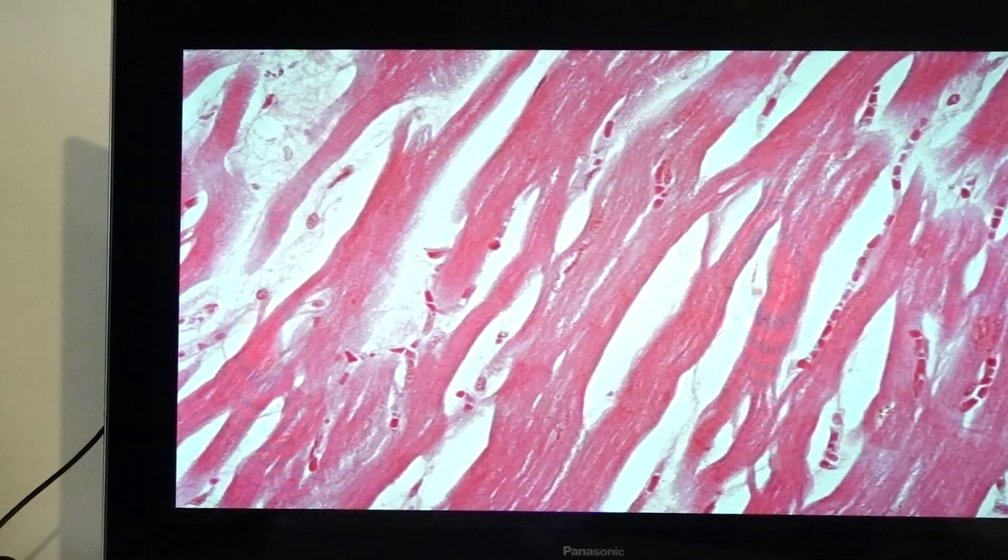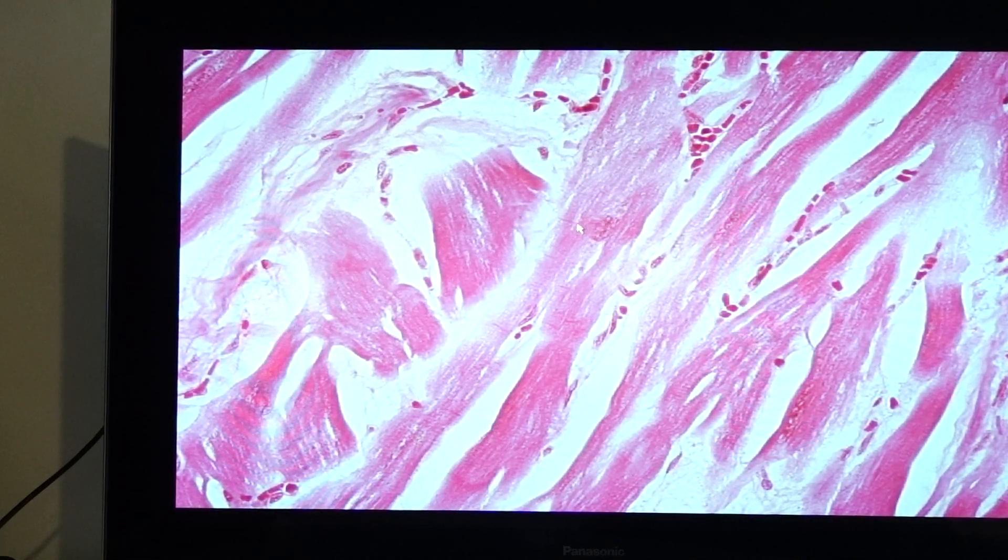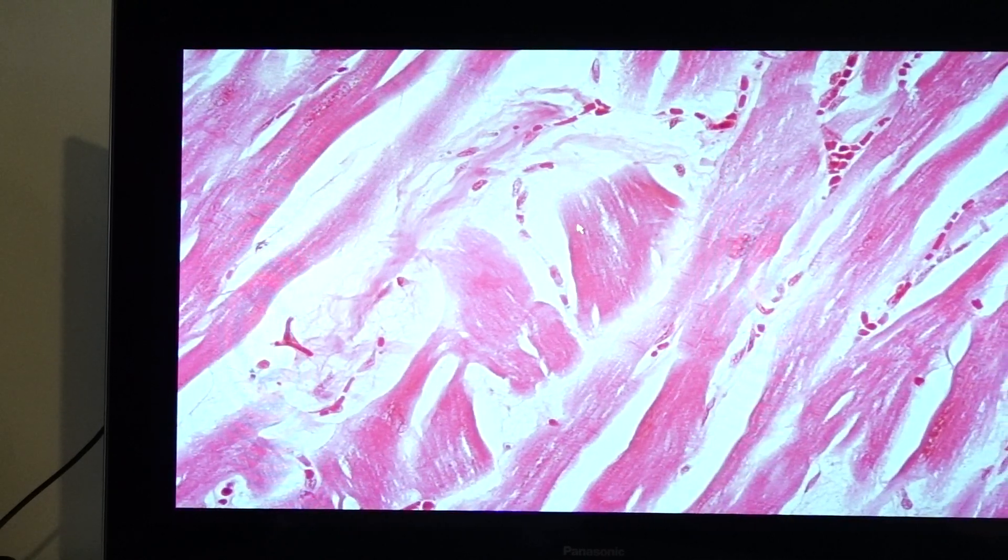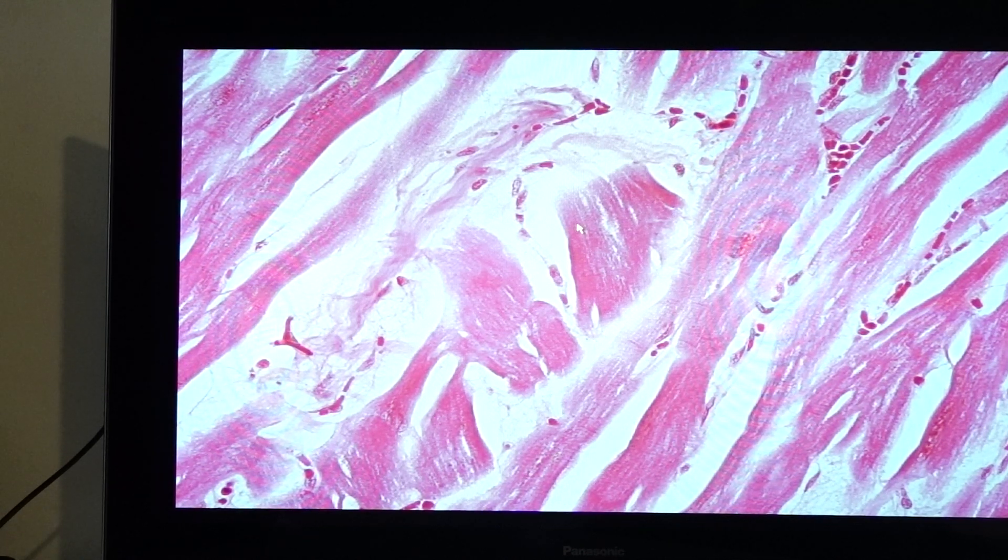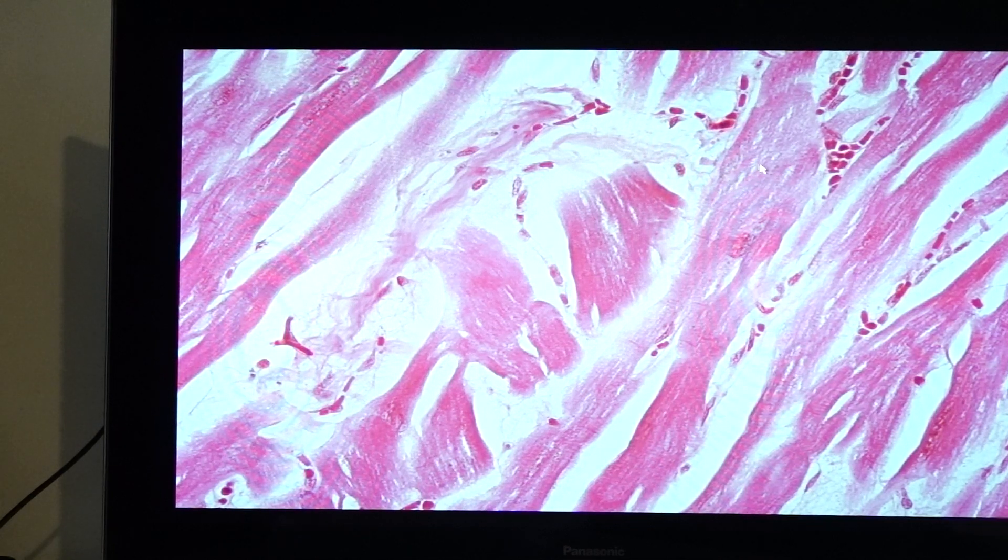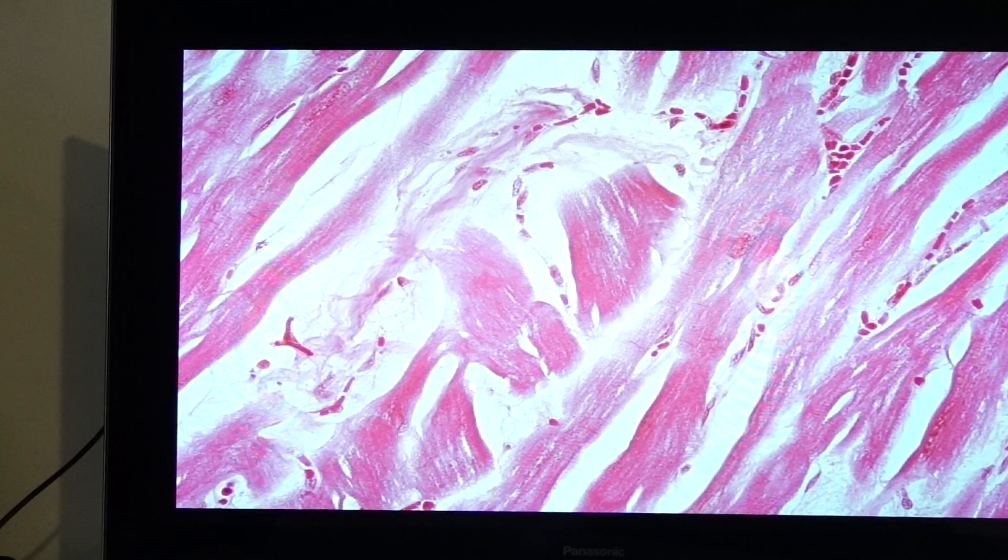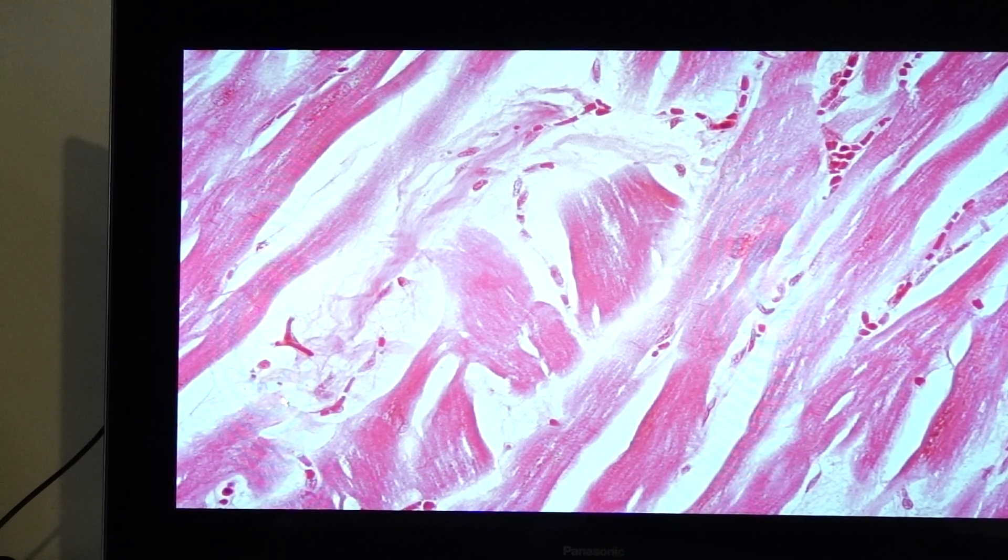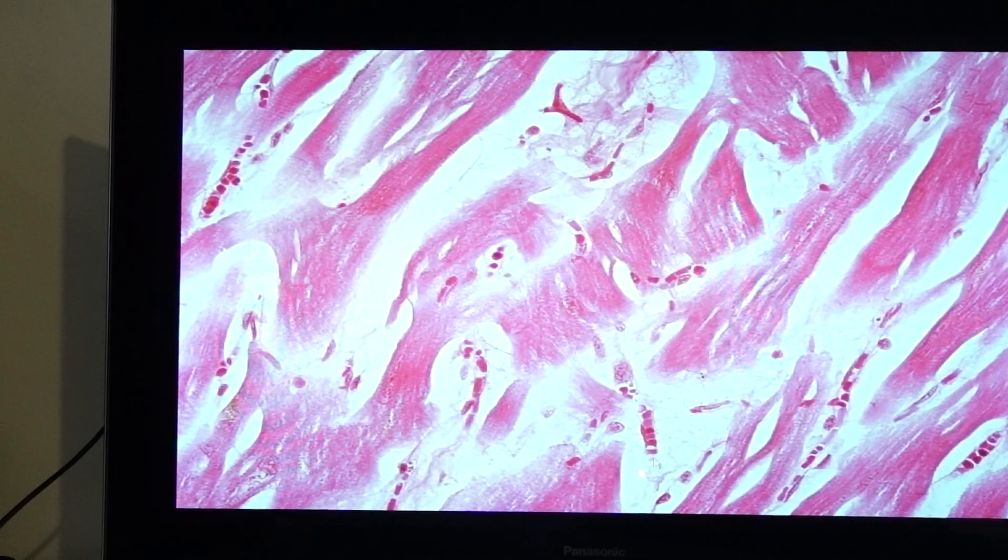Histologically, what we would see would be the presence of thickening of the myocardial fibers. You have the thickening of the myocardial fibers. Here, you have the nuclei. And then, what you can see is that there would be the myocardial disarray, haphazard formation of the cardiac myocytes. In this particular magnification, you can already see that there would be the presence of irregularly arranged myocytes, haphazardly arranged. Some are going obliquely, and some are going in this side.